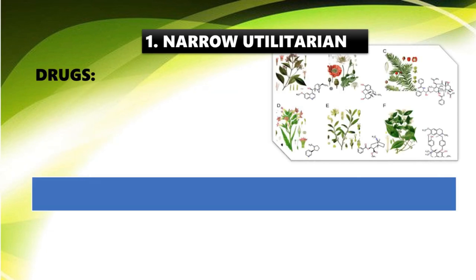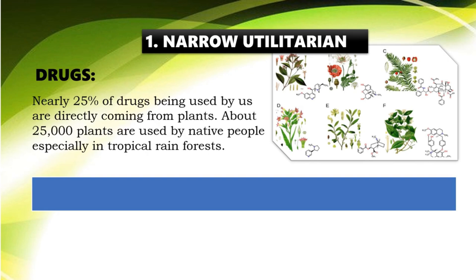Drugs are another direct benefit. Nearly 25% of drugs being used by us are directly coming from plants. About 25,000 plants are used by native people, especially in tropical rainforests. So drugs represent a major direct benefit of biodiversity.